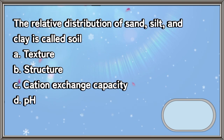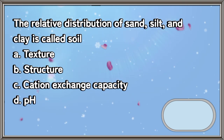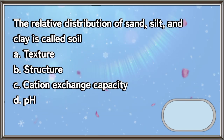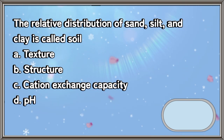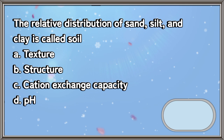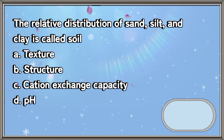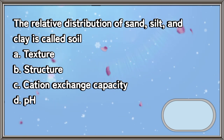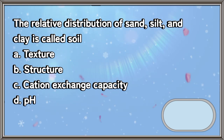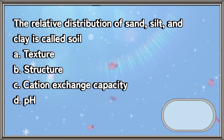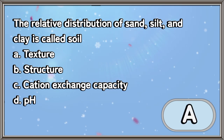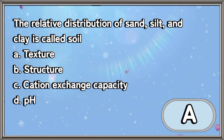The relative distribution of sand, silt, and clay is called soil: A. Texture, B. Structure, C. Cation exchange capacity, D. pH. The answer is letter A.